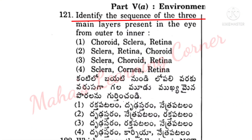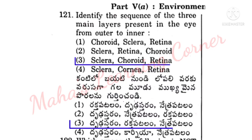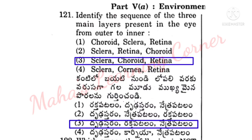Identify the sequence of the 3 main layers present in the eye from outer to inner. Kanti lho baiyitin indi lopal verukku varusagagala 3 mukhi mena paralanu guttin chandhi. Correct answer: Option 3 is sclera, choroid, retina. Drodastarum, rakta patalum, natra patalum. Option 3 is the correct answer.